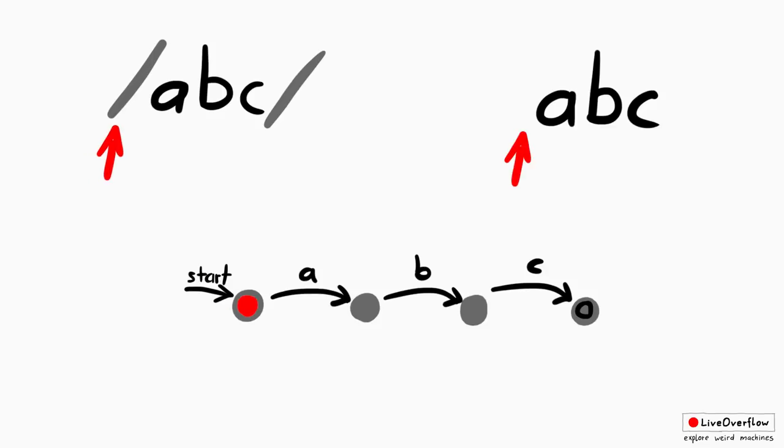So we start here, then we can move to the next state when we see an A, to the next when we see a B, and to the last one when we see a C, which means we match the string. And obviously if our string would have been AXC instead,